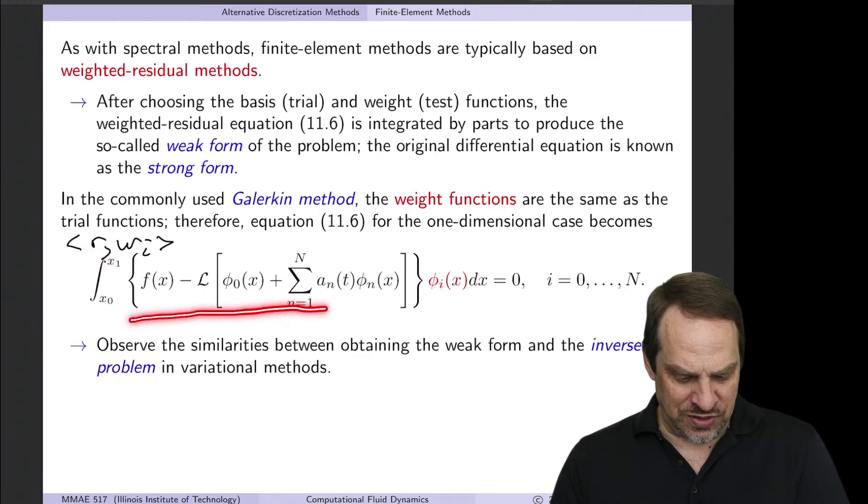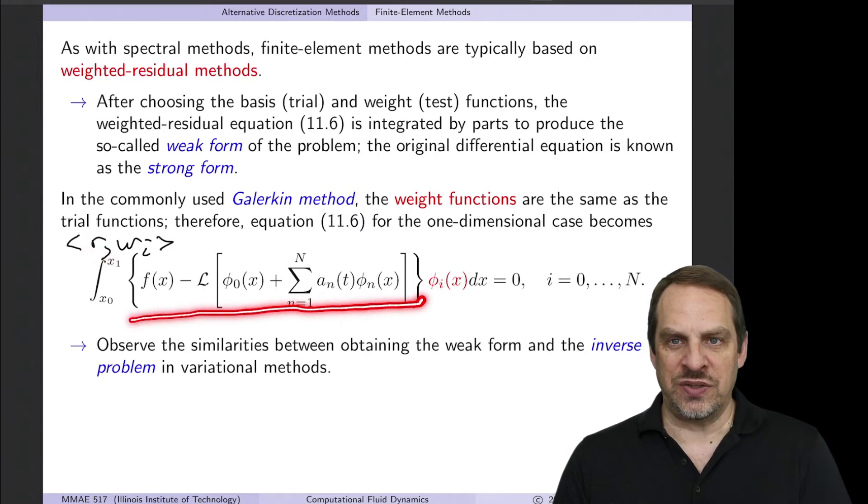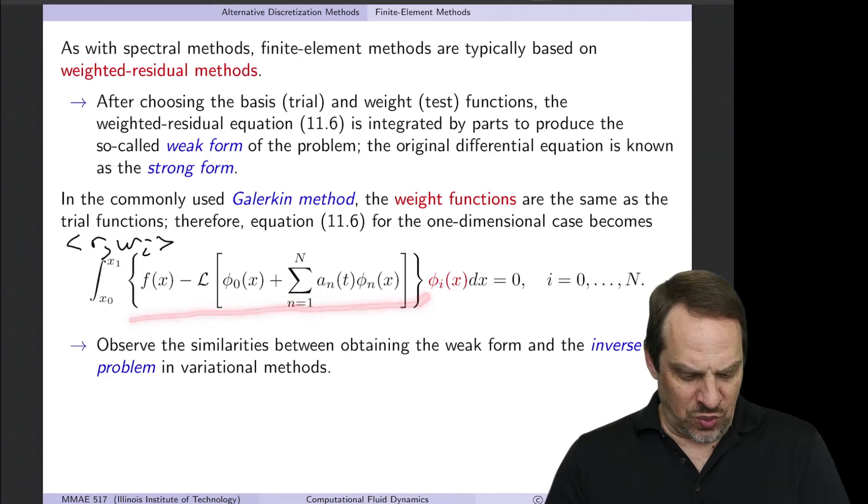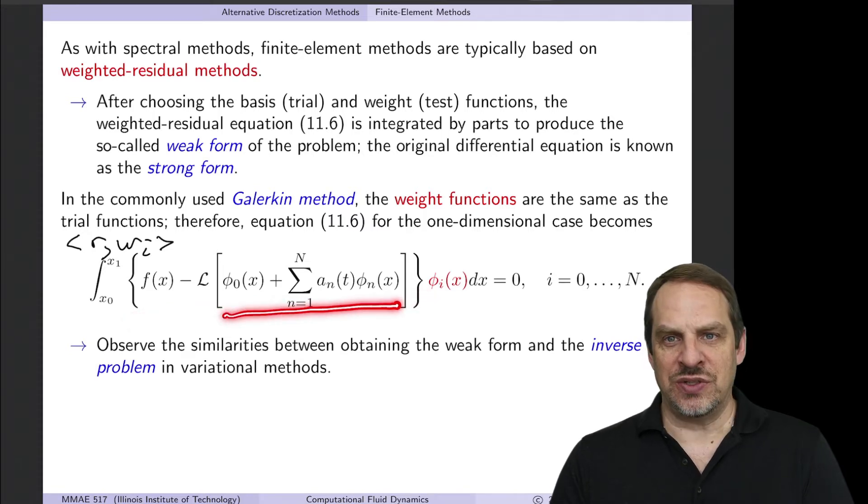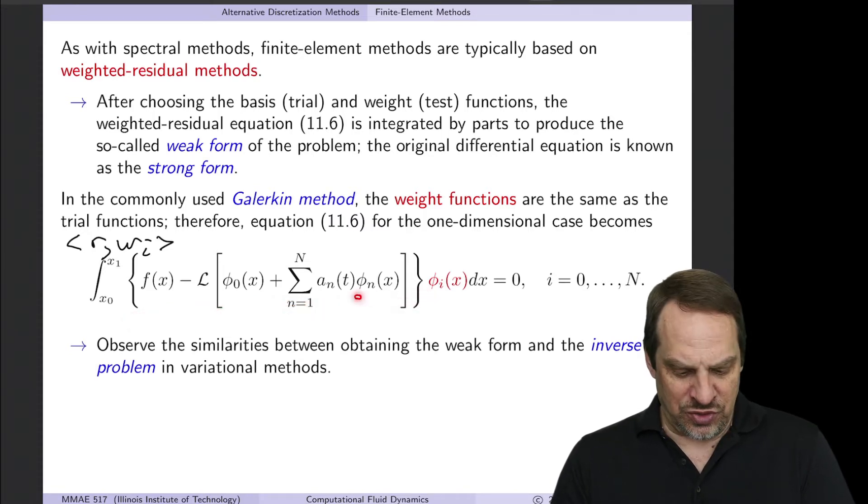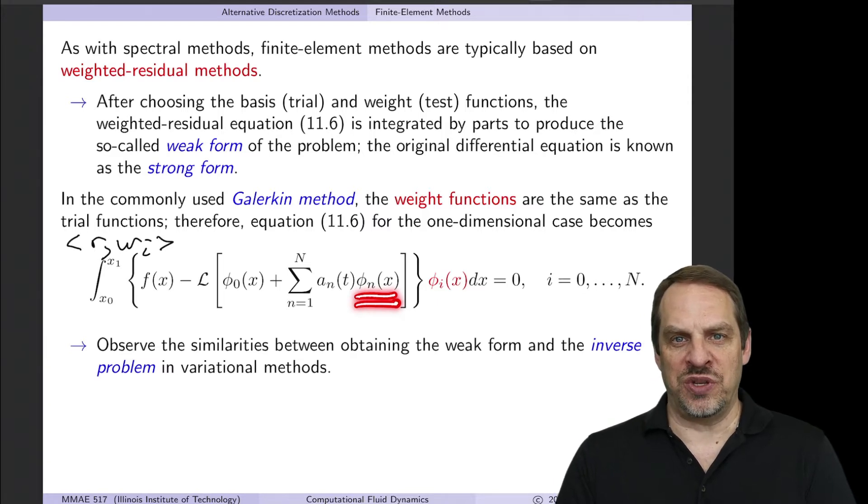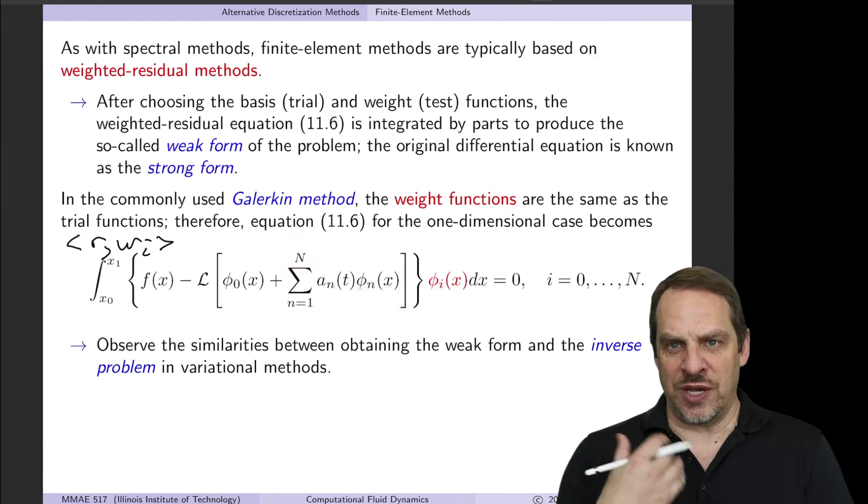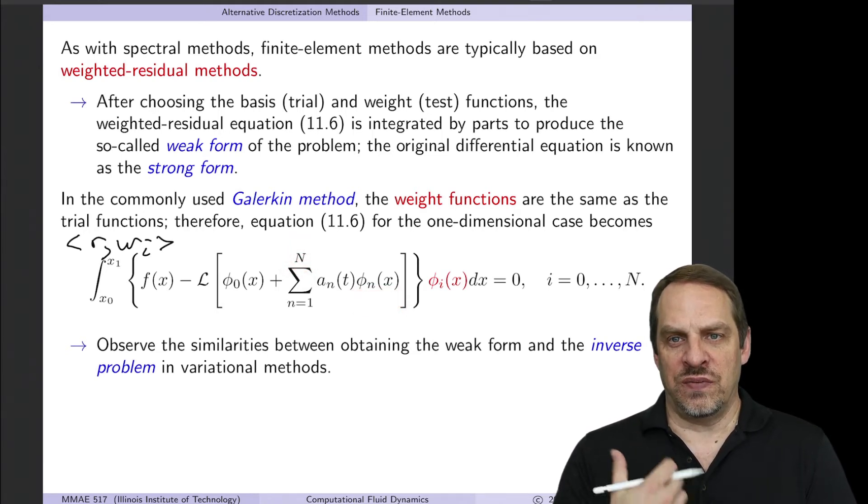So the residual is here in squiggly brackets. That's F minus L operating on U, where U is being expressed as a series expansion in terms of these basis functions, the phi sub n's that we've pre-selected. We have capital N of those terms, and that will determine the order of the approximation.